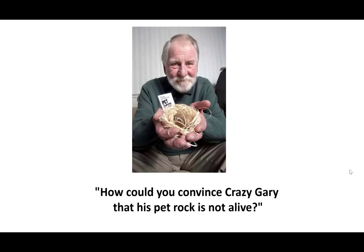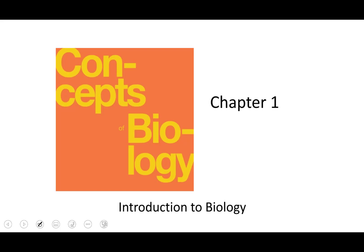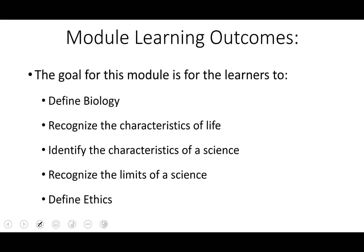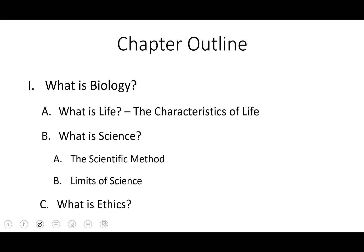This information comes from the first chapter in our textbook, Concepts of Biology. In this module, our learning outcomes are for learners to be able to define biology, recognize the characteristics of life, identify the characteristics of a science, recognize the limits of a science, and also to be able to define ethics. Our first lecture is about what is biology and how we characterize life. The next lecture will be about what science is and the scientific method, and the third is what is ethics.